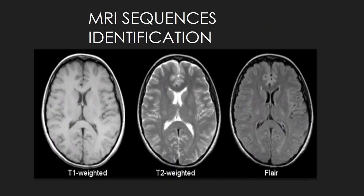The next important topic is MRI sequences and their identification, where most students face a challenge recognizing T1-weighted, T2-weighted, and other special sequences. A very familiar rule is 'World War 2' — water is white on T2-weighted image. If you see bright CSF in the ventricles, it is definitely a T2-weighted image. A question then arises: how do we distinguish a T1-weighted image from FLAIR — Fluid Attenuated Inversion Recovery — where CSF is suppressed so that edema in the brain can be better identified?